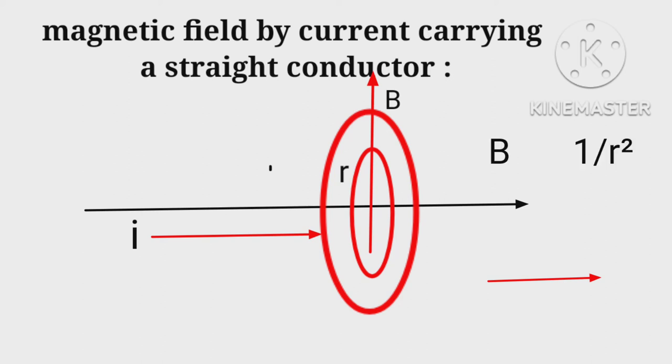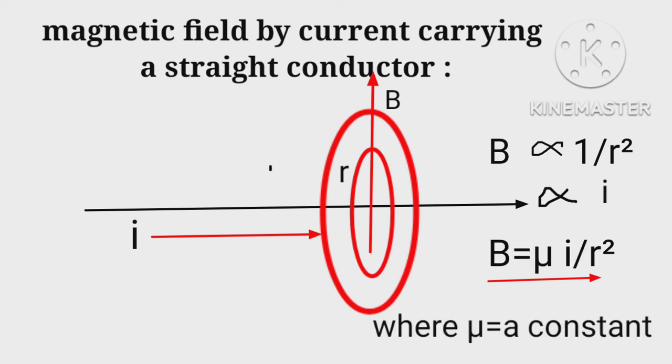inversely proportional to distance r squared away from the direction of current, and directly proportional to the current. That is, magnitude of magnetic field B is equal to i over r squared.